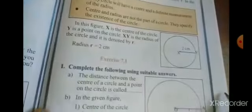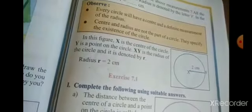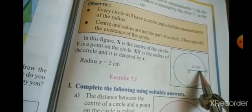So in this figure, X is center of the circle, Y is point on the circle. This is the radius XY.